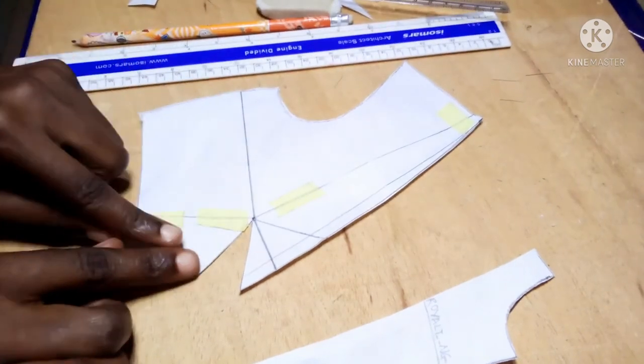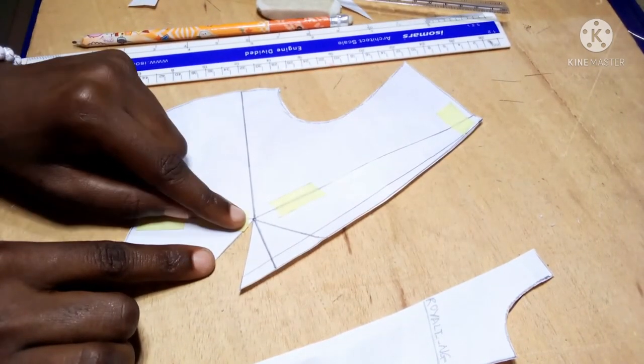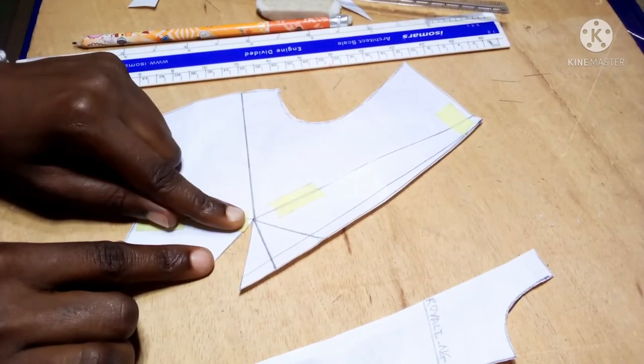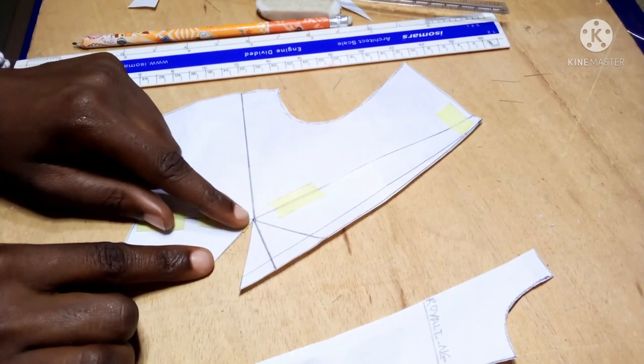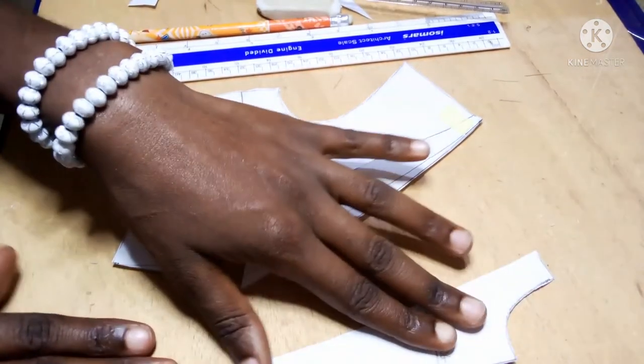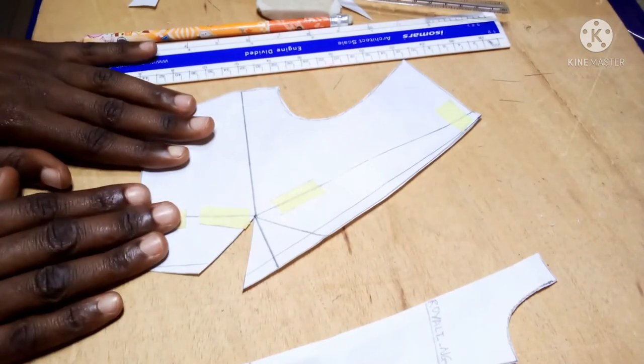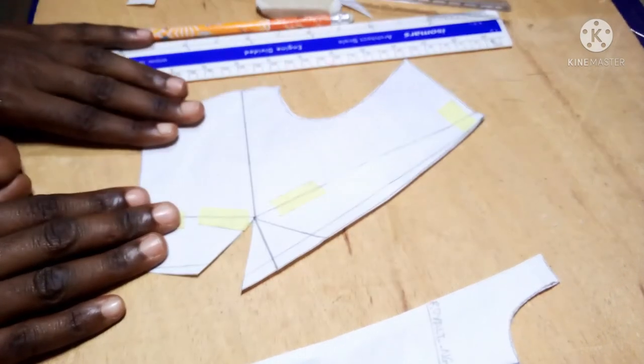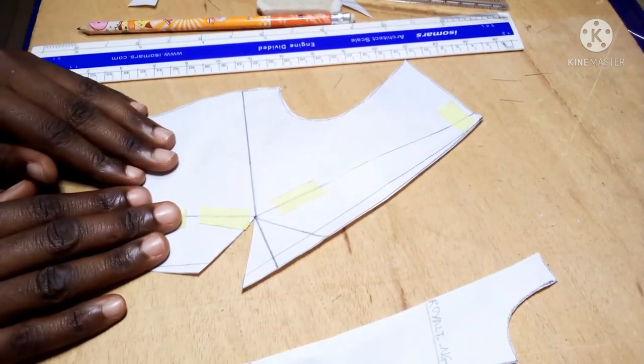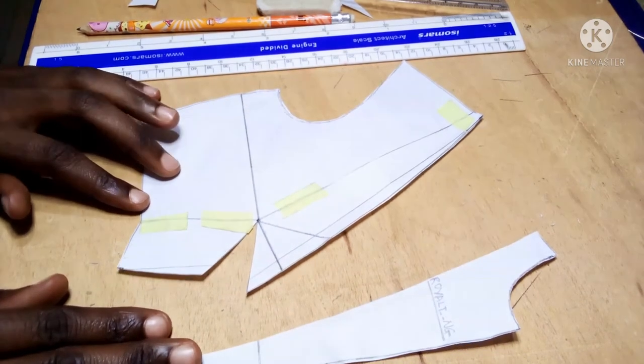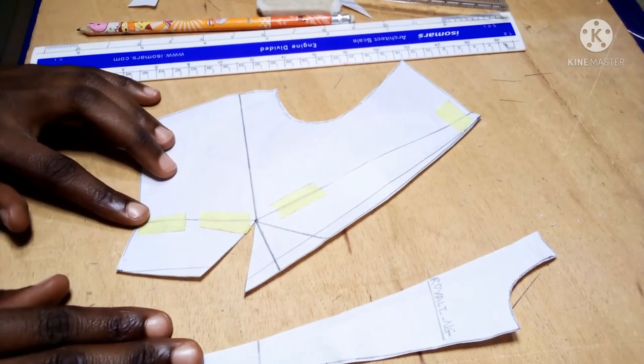Okay. Now remember when you are sewing your dart, ensure that your dart stops about one inch before your apex. You can cut this on another fabric, you can cut this on another type of fabric. Remember to add all your sewing allowance. I hope this video is helpful. Thank you so much for watching. God bless you. Bye.